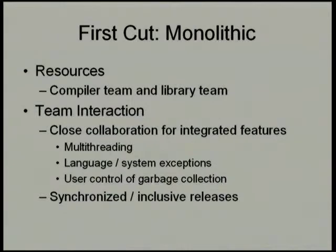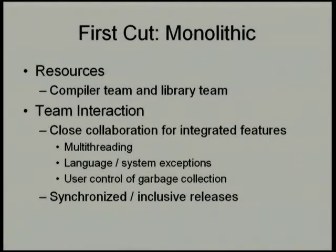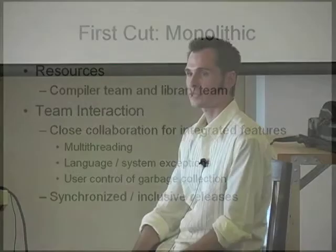The first cut is just the traditional monolithic library — sit down and say we want features X, Y, and Z and we're going to put them all in. The simplest division is a compiler team and a library team working closely together. The library team writes the thread code and IO code; the compiler team handles the actual compiler and any runtime features necessary to support it, like array resizing.